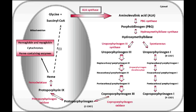Name the rate-limiting enzyme in heme synthesis. The rate-limiting enzyme in heme synthesis is Delta-Aminolevulinic Acid Synthase. This enzyme combines glycine plus succinyl CoA, along with cofactor vitamin B6, to make Delta-Aminolevulinic Acid.